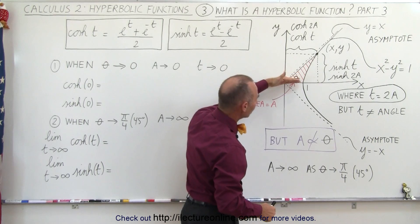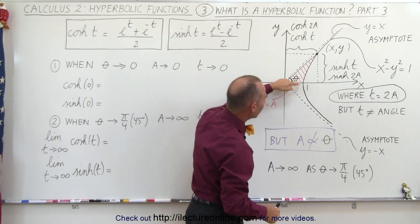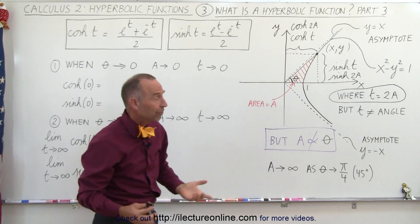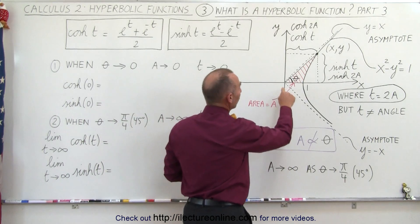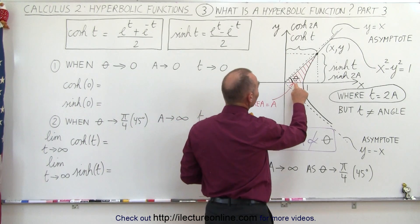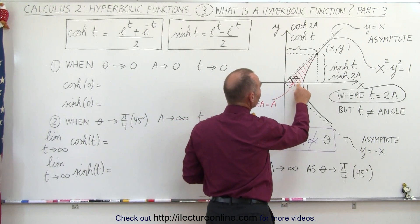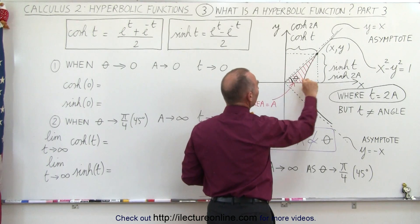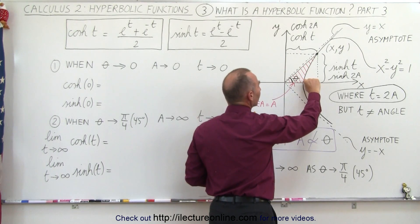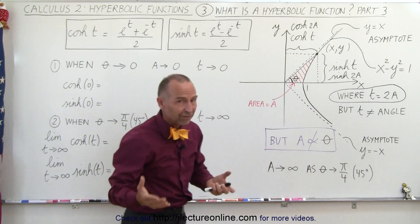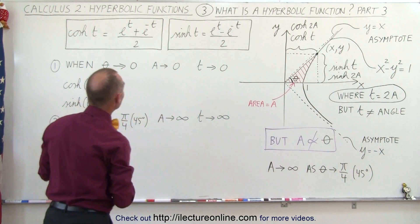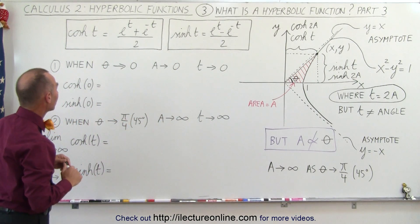When the angle goes to 0, the area in here goes to 0 as well. What does that mean for the hyperbolic sine and cosine? If the area goes to 0, you'll be at this point right here. The hyperbolic cosine should be equal to 1, and the hyperbolic sine should be equal to 0. Let's see if that works out with our definitions for the hyperbolic sine and cosine.